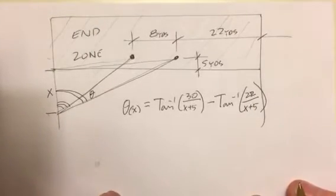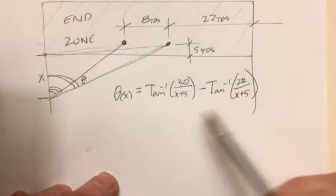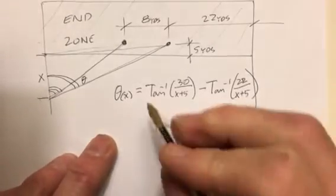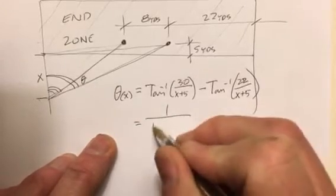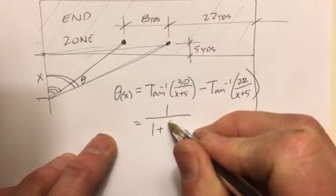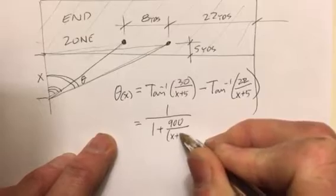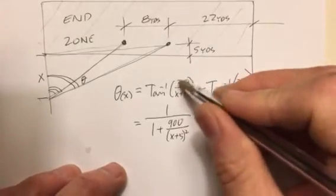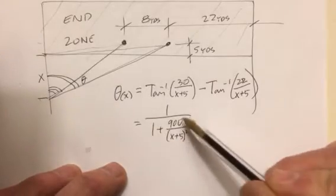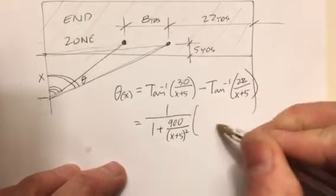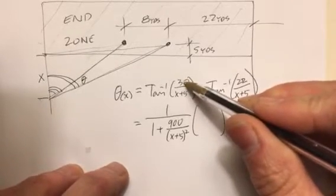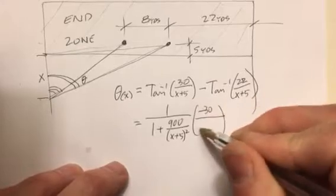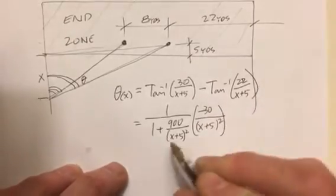As with all optimization problems, our goal is to take the derivative and set it equal to zero and solve for that maximum value of the angle. To take the derivative, if you remember how it goes with inverse tangent, it's going to be 1 over 1 plus this inside squared — I'm going to make that 900 — and then x plus 5 squared. Don't automatically foil things out until you really need to. Then I take the derivative of the inside using the quotient rule: it's the bottom times the derivative of the top, which is zero, minus the top times the derivative of the bottom, which is just 1. So it's minus 30 all over x plus 5 squared.